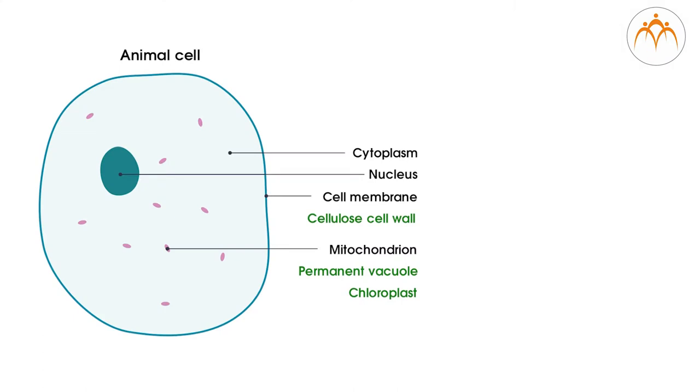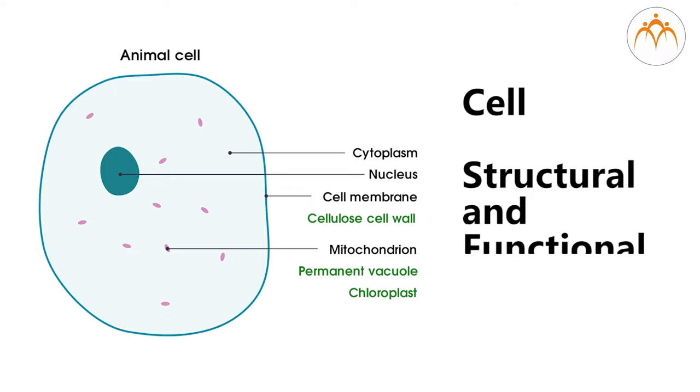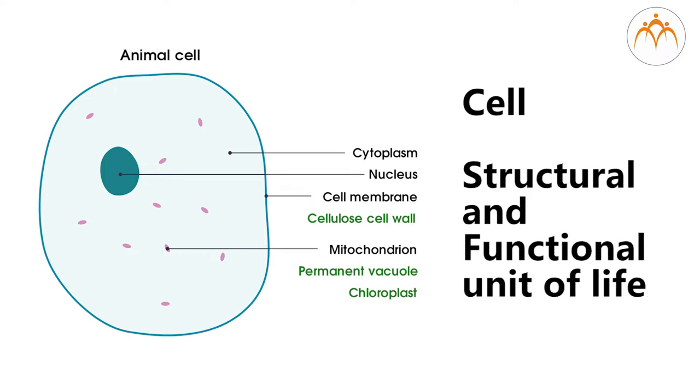All organisms are made up of cells. Hence, the cell is considered as the structural and functional unit of living organisms. In unicellular organisms, a single cell performs all the functions. But in multicellular organisms, work is distributed — that is, division of labor — meaning cells perform only those functions which are assigned to them.